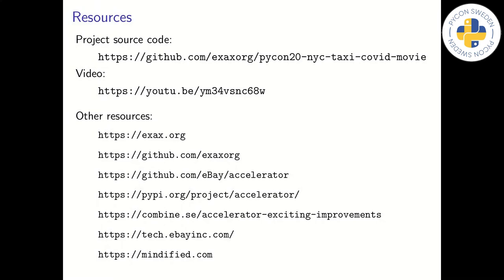And finally, as promised, here is a link to all the source code used for the project. We've also added a link to the video on YouTube, so you can see it in more detail. And we've added links to exax.org, which is where news and posts about the accelerator are published. We link to the accelerator's example project GitHub page. The accelerator's main repository at eBay's GitHub account. The accelerator at PyPI, and some articles from companies using the accelerator. Thank you for listening.